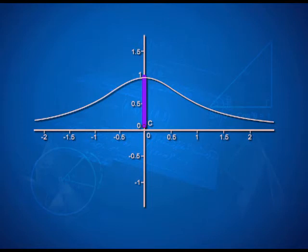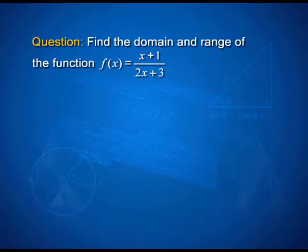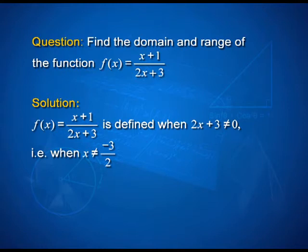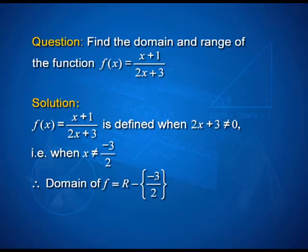One more question: find the domain and range of the function f, where f(x) = (x + 1)/(2x + 3). These are very tricky functions to graph on paper, but if it is a rational function, it can only be defined where the denominator is not 0. So the domain includes all those values of x for which 2x + 3 ≠ 0, that is when x ≠ −3/2. Therefore, the domain is all real numbers except the number −3/2, written as the difference of the real numbers and the set containing −3/2.